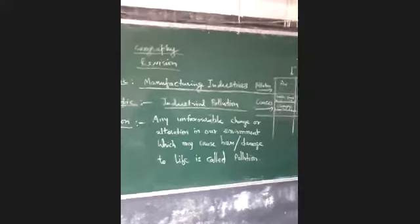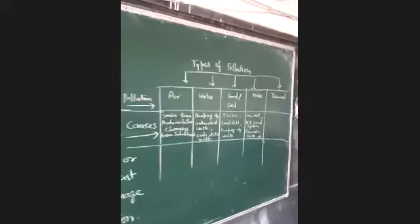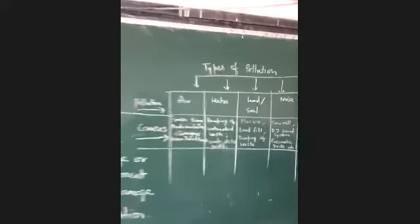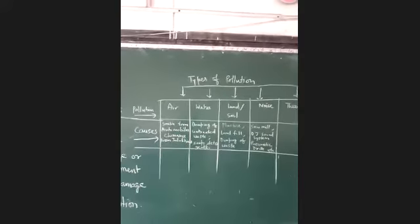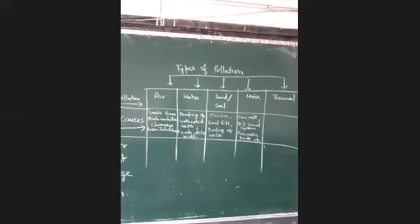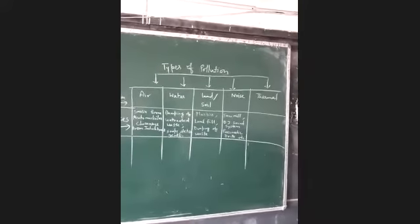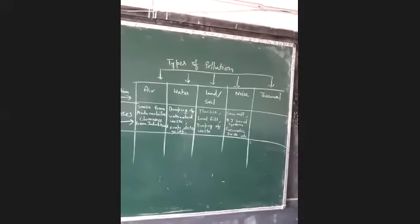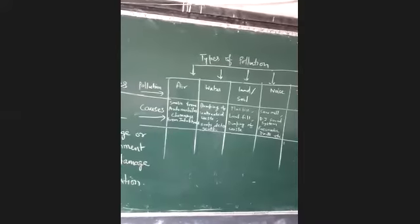Now what are the types of pollution? The types of pollution are divided to air pollution, water pollution, land and soil pollution kept together, then noise pollution and thermal pollution. So we will begin with the causes of air pollution.